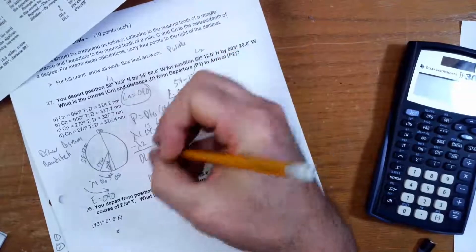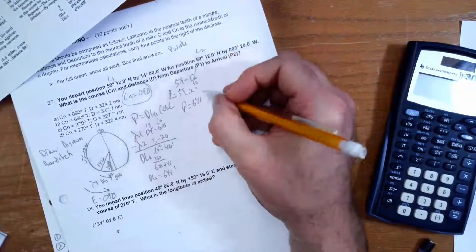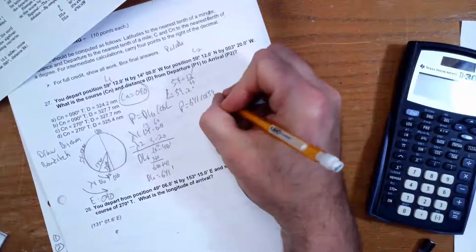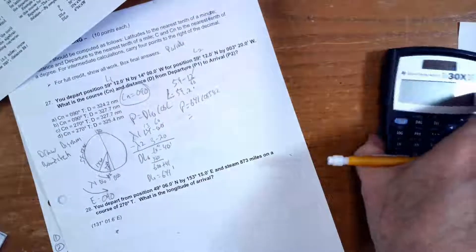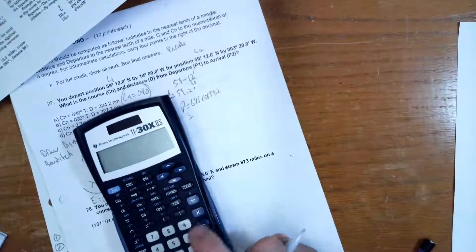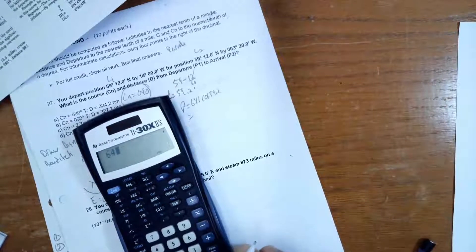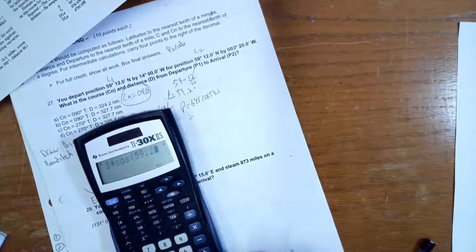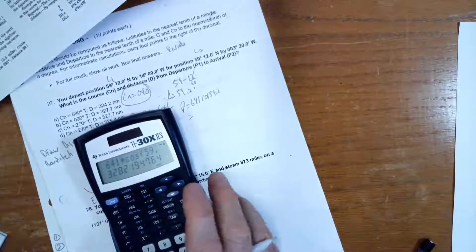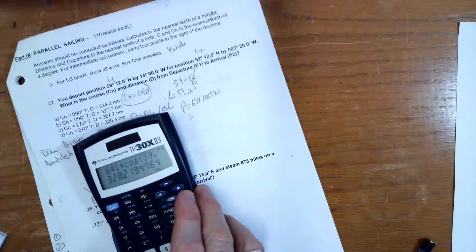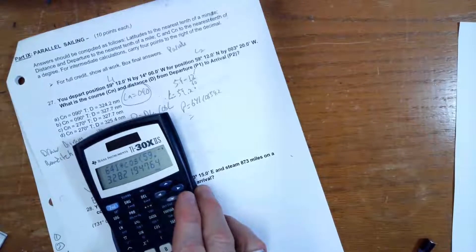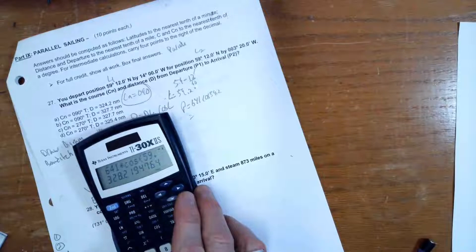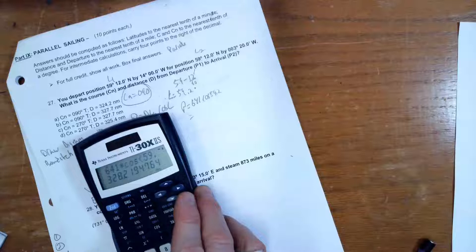So P equals DLo, 641, times the cosine of L, 59.2. And that, 641 times the cosine of 59.2, and that equals 328.2. Does that make sense?